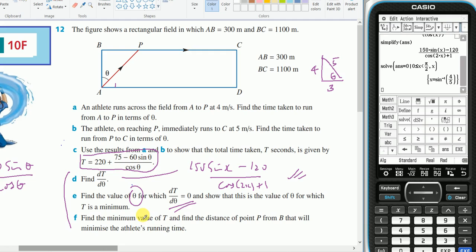So the angle... show that this is the value of theta for which t is a minimum.